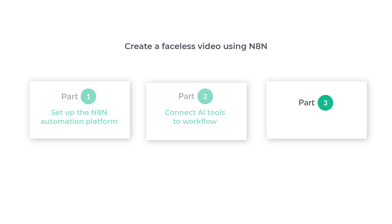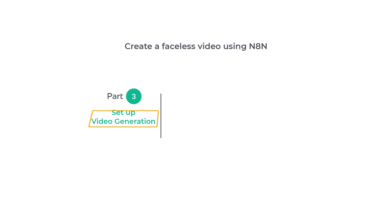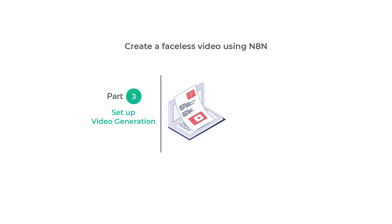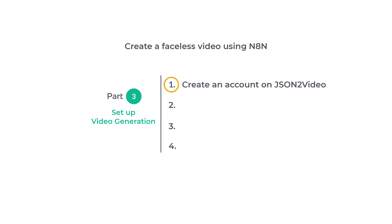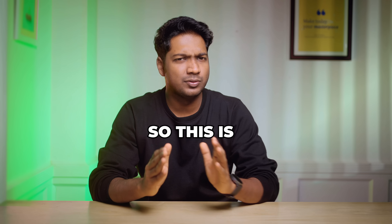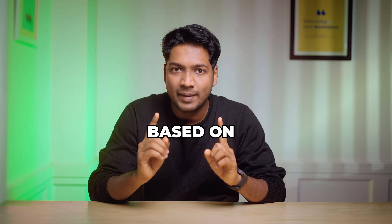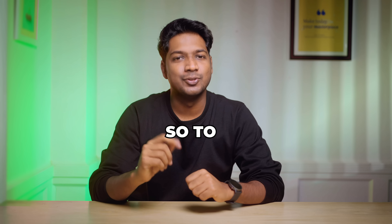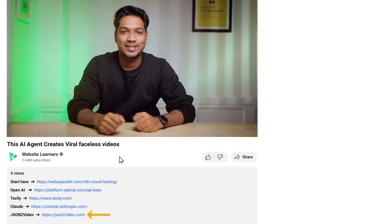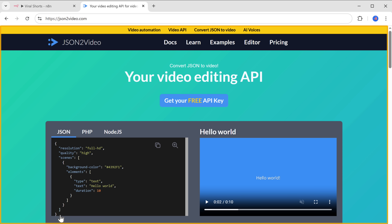Let's go to the third part of this video, which is to set up video generation. This is where the video generation actually begins using the script created in the previous steps. We're going to do four steps. The first step is to create an account on JSON2Video — this is the tool we'll use to generate the video based on the script. Just click the link in the description, and it'll take you to the tool. Click get API key and sign in using your Google account.